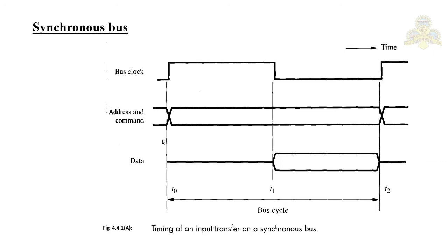We will now see how address, command, and data are placed on the bus. The address and data lines are shown as high and low — some lines would be high and some low depending on the address or data pattern being transferred. The crossing points in the diagram indicate the time at which the patterns change. We will consider an example of how data would be inputted from a device — this is a read operation.